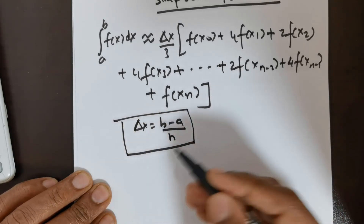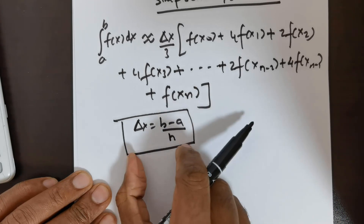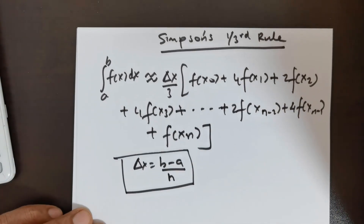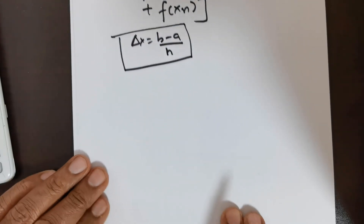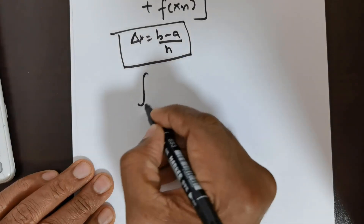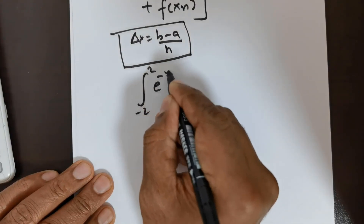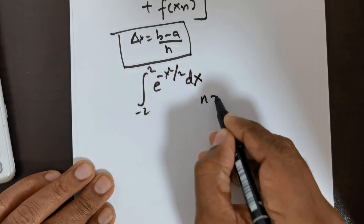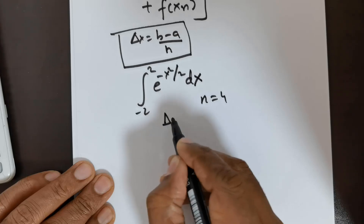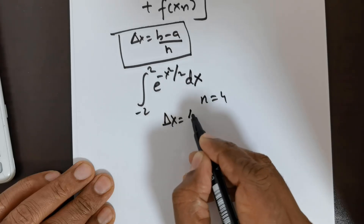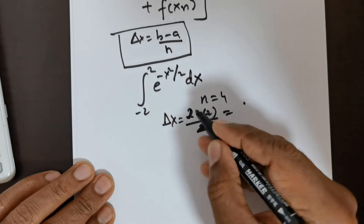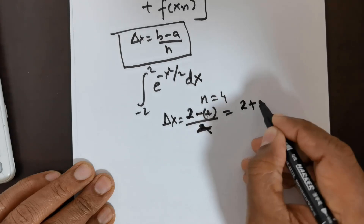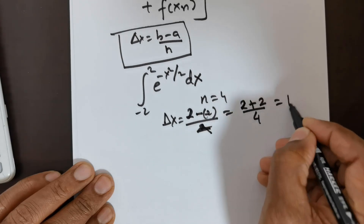So that completes the Simpson's rule formula. Now I will apply this Simpson's rule to integrate from negative 2 to 2 of e raised to the power of negative x squared over 2, dx. I'll take n equal to 4. So delta x equals b minus a divided by 4, which is 2 plus 2 divided by 4, equal to 1.